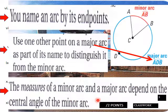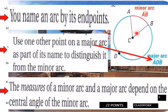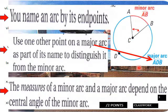The measures of a minor and a major arc depend on the central angle of the minor arc. The central angle decides how many degrees are in the arc.